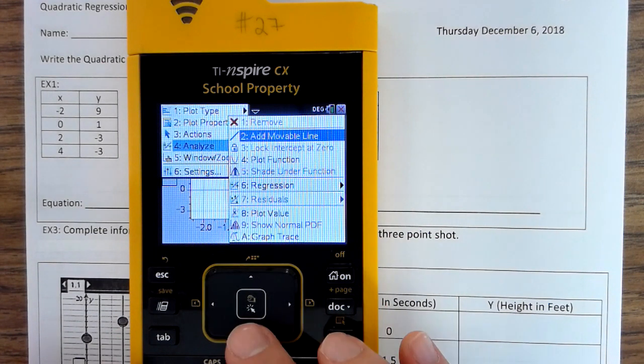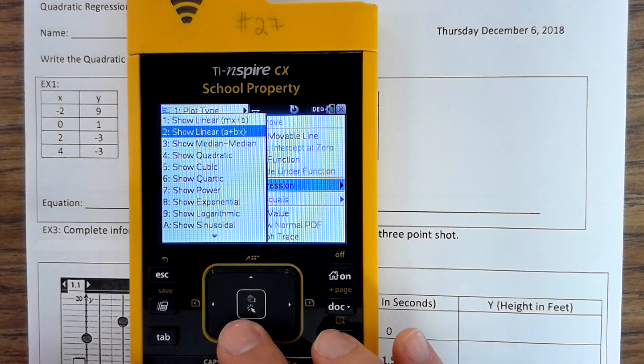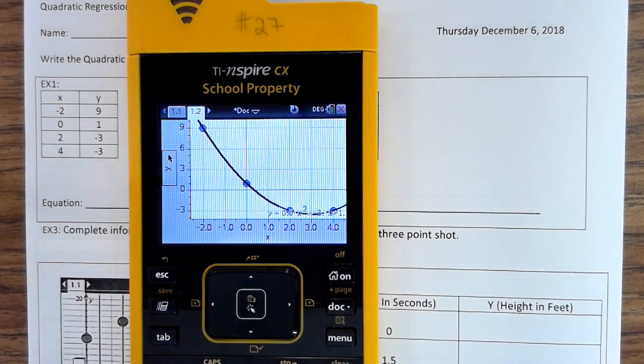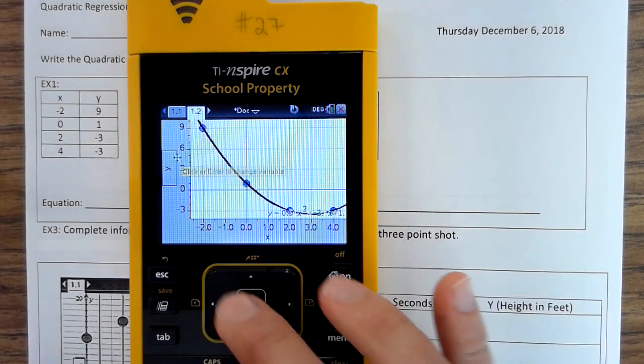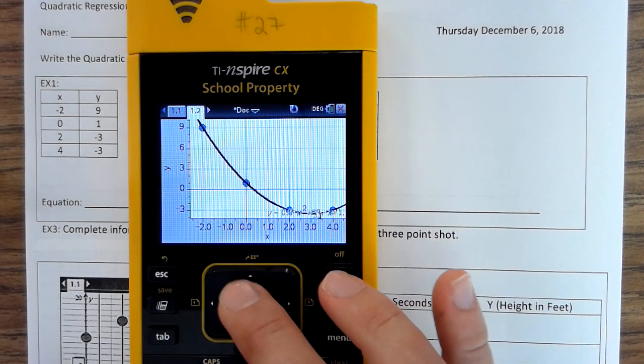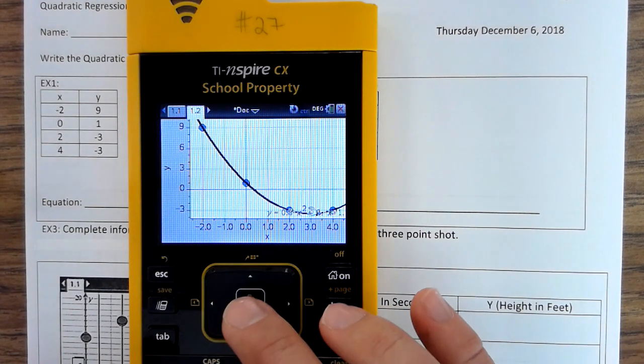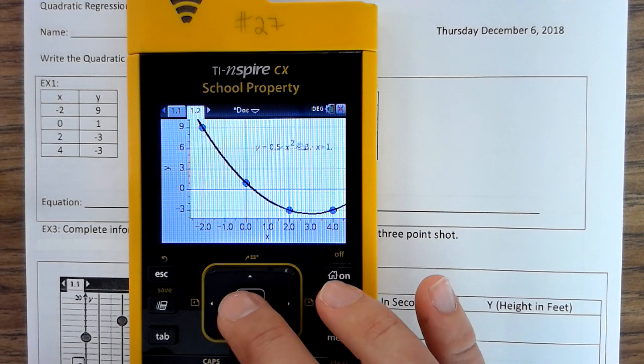Menu, Analyze, Regression, Show Quadratic. Now you can't see the equation, so I'm going to move my cursor over the line. Press Control, click.